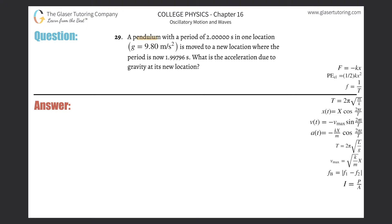Number 29. A pendulum with a period of two seconds in one location where g is 9.80 m/s² is moved to a new location where the period is now 1.99796 seconds.